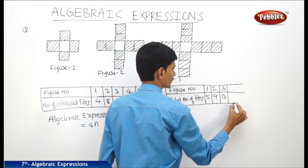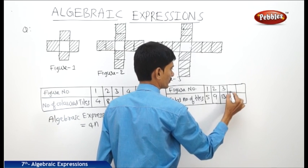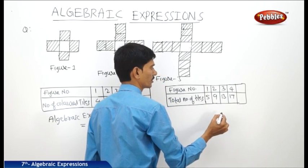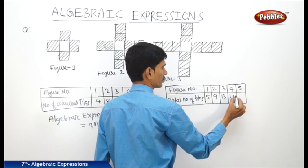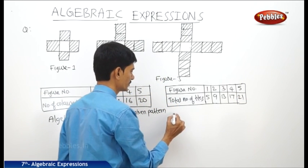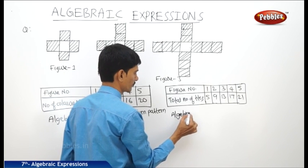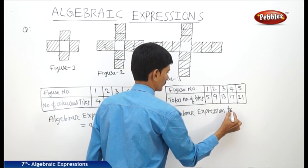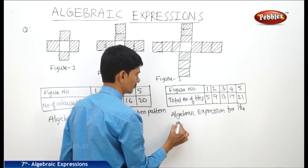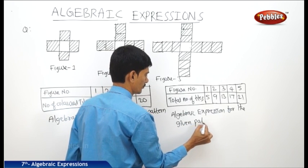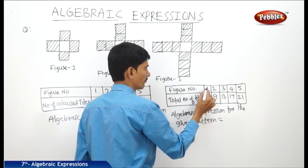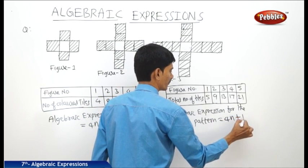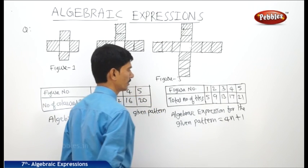So the algebraic expression for the given pattern: 1 times 4 plus 1 is 5, 2 times 4 plus 1 is 9. Therefore we write 4n plus 1, where n is any natural number.